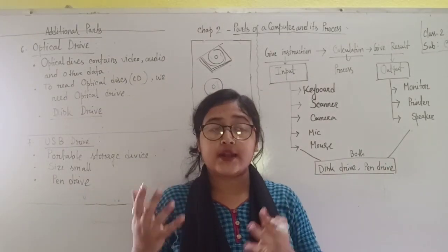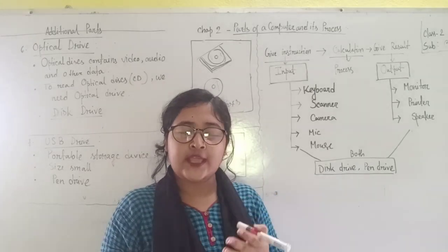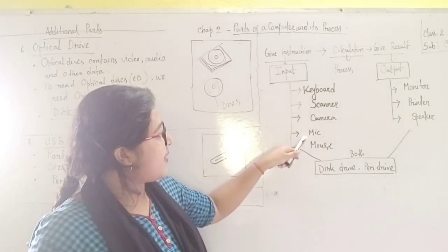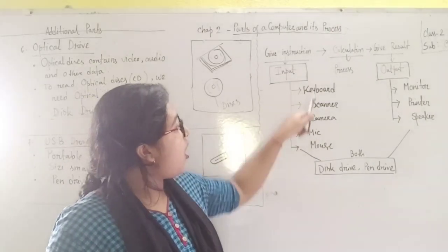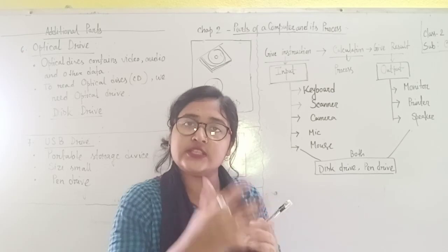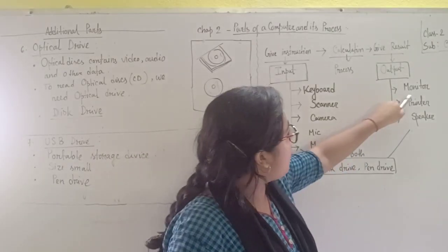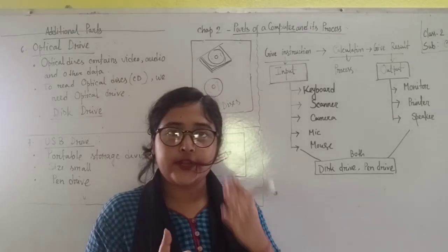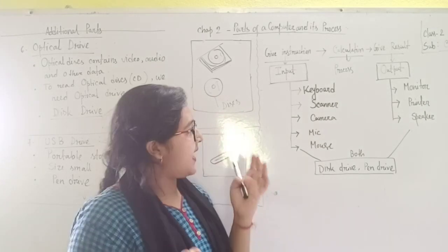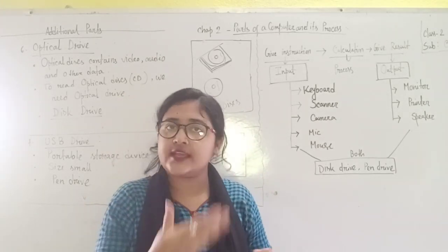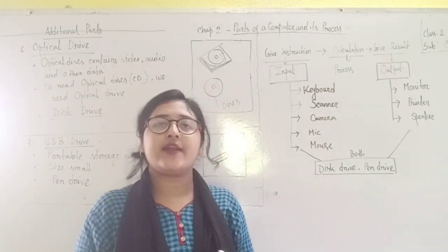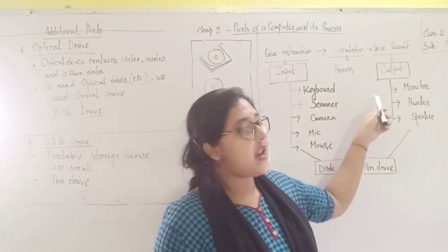So, input means what are the parts or things that we use to give the computer instruction or command? Those are keyboard, scanner, camera, microphone, and mouse — we use all these things to give computer instruction. These are input devices. And output devices are monitor, printer, and speaker — they are output devices. We get the result through monitor, printer, and speaker. Simply saying, without keyboard you can't type anything in the computer, so you can't do any input. And without the monitor, you can't see anything in the computer, so you will not get your result.